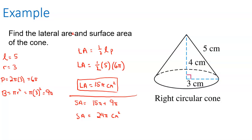If you want a decimal approximation, 24 times pi gives 75.40. The first expression is the exact value; 75.40 is an approximation. I keep the exact value as long as possible because doing approximations along the way causes accumulated errors.